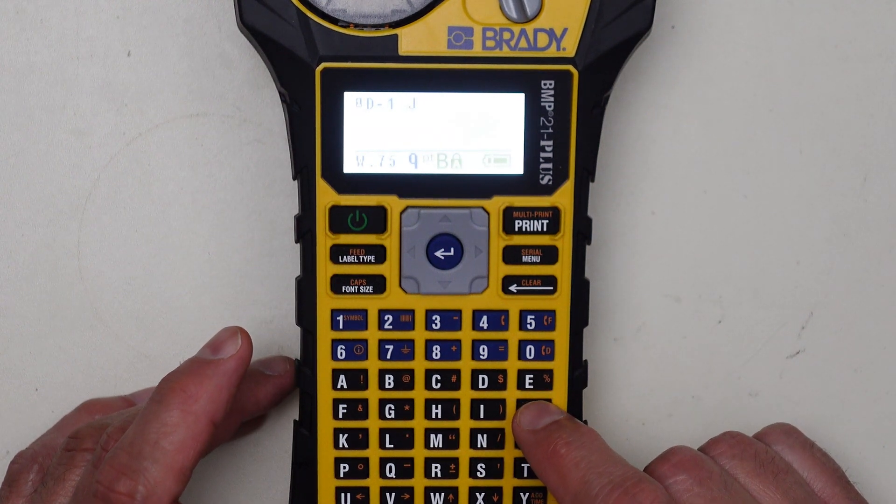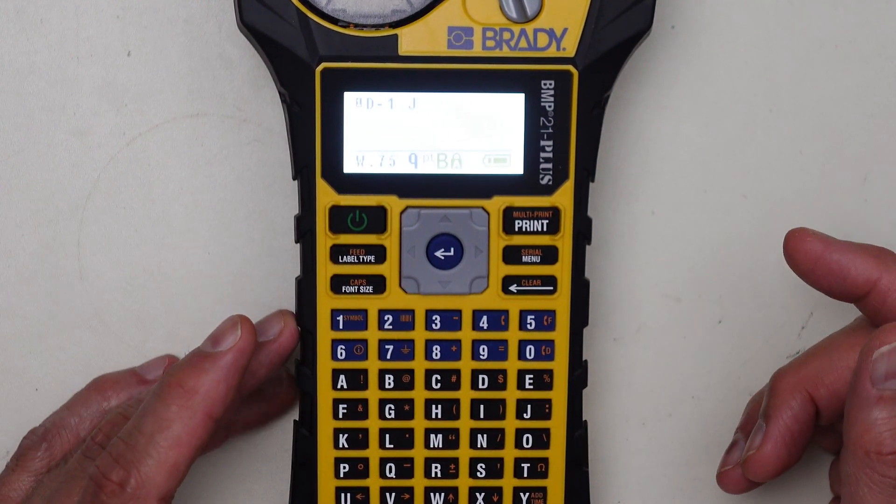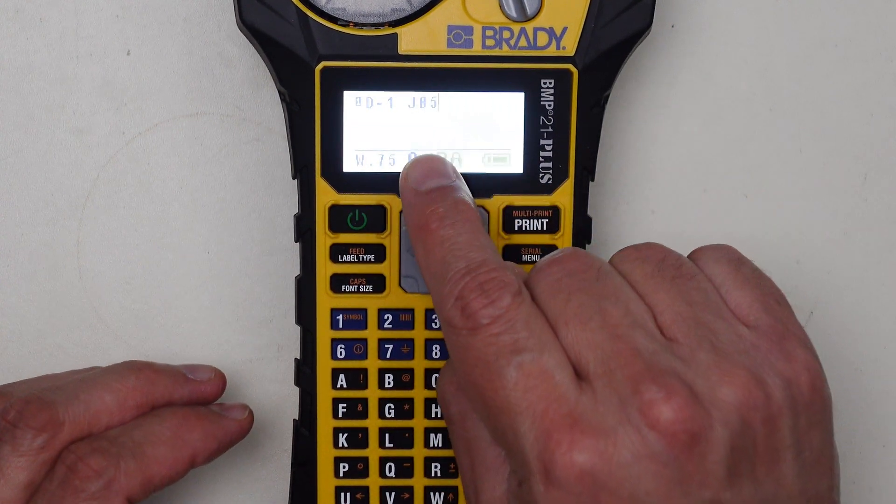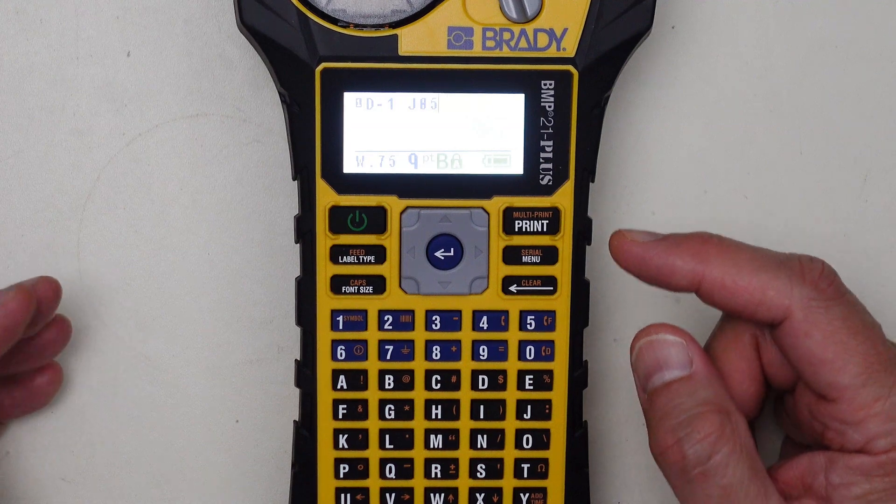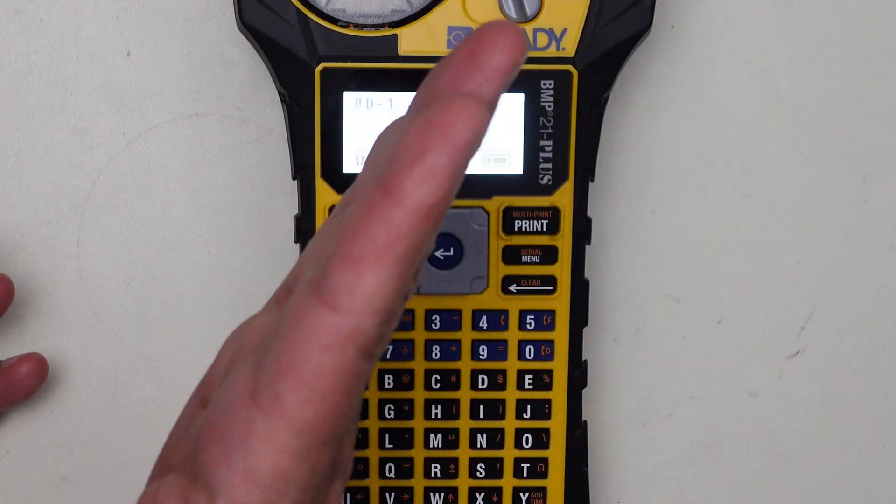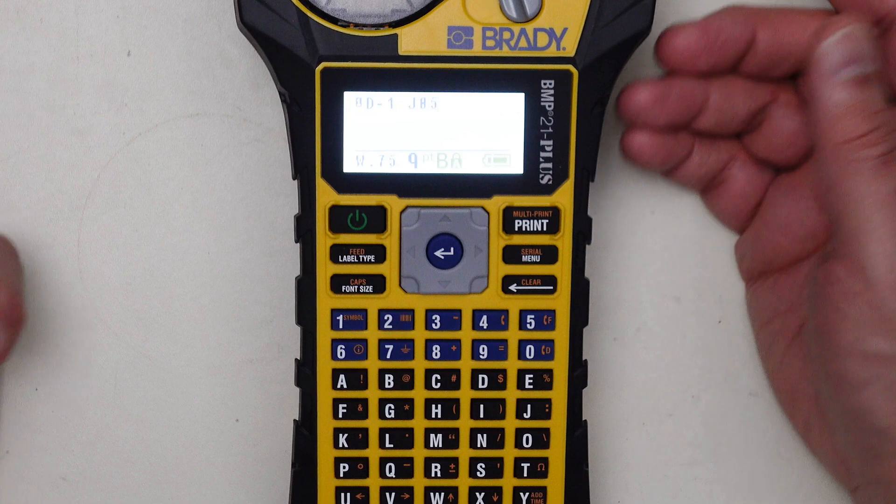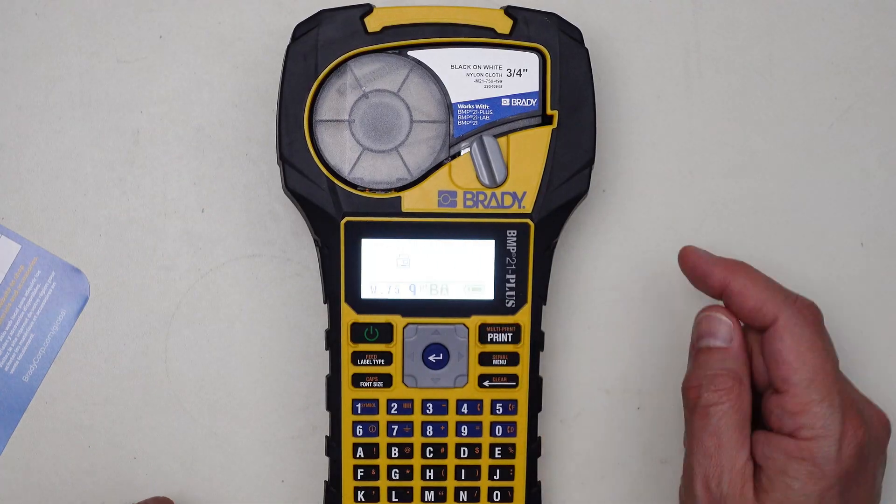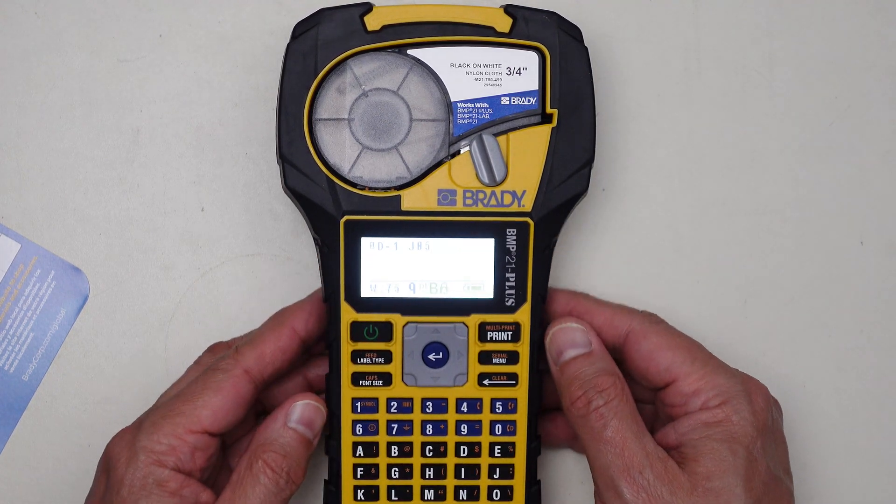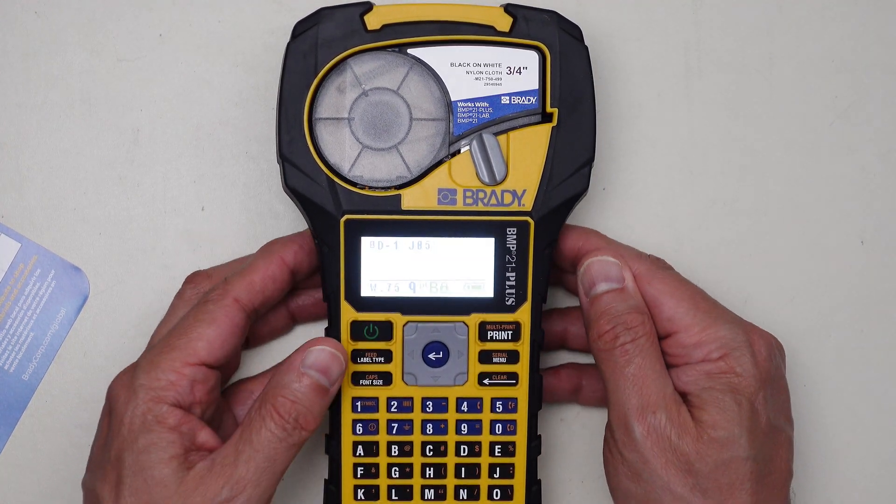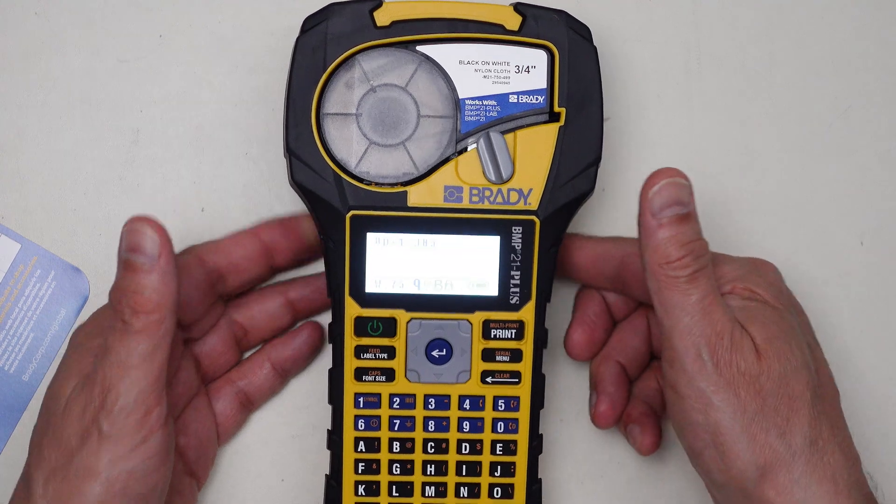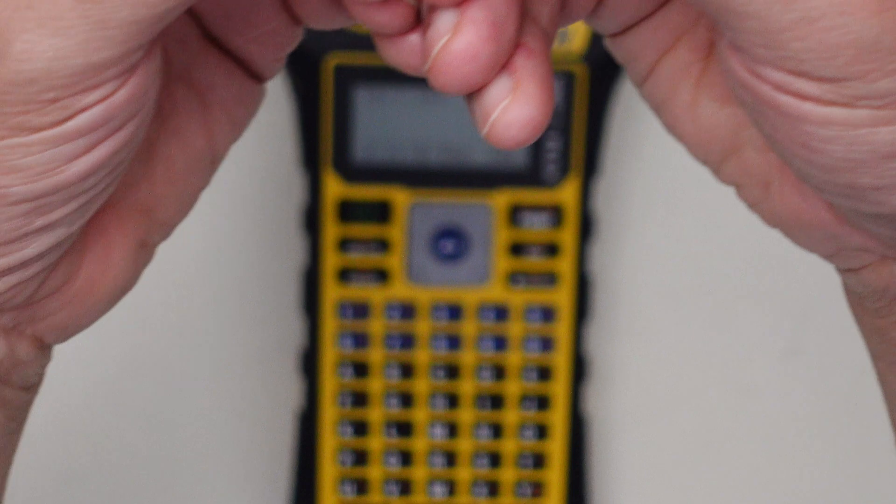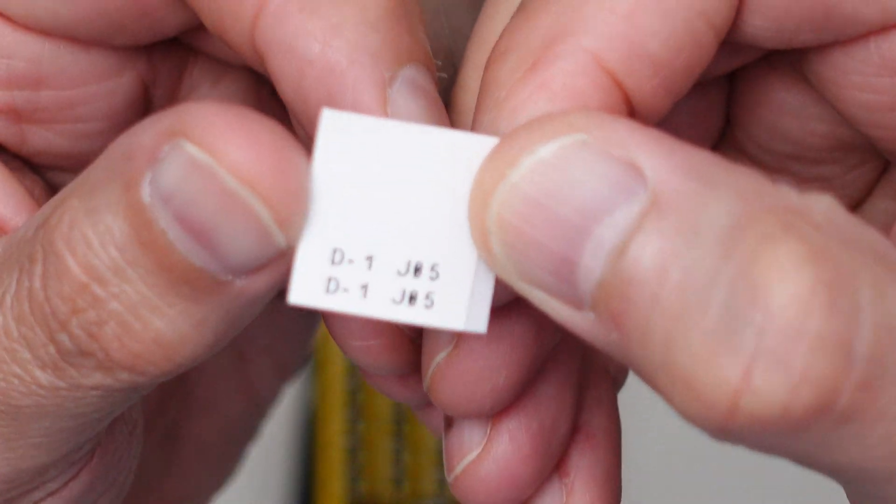So if I go ahead and type in here, let's say I pick my distribution panel one. So I will say D dash one. I'll give it a space and then which one of the actual jacks that I have on that distribution panel. The two distribution panels I have have 24 jacks. So I will then say J, let's say I won't put a dash on this one, I'll say J 05. Notice the zero in the screen here looks like an eight, but when it prints out, it would be a zero with a cross through it diagonally. So let's say that's the label that I want. All I have to do at this point is hit print.